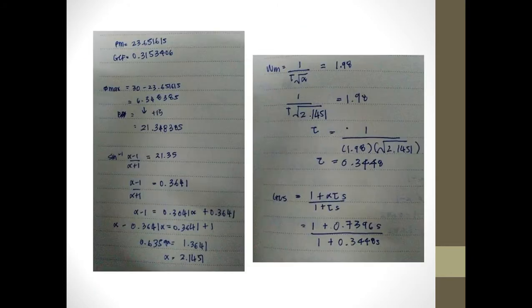Next, we have to find the transfer function to determine the lead and lag. Phase margin is 23.65 and gain is 0.315. Phi maximum equals 30 minus 23.65. We will get 6.348 and it has to be added with 15 to get the phase margin, 21.35.